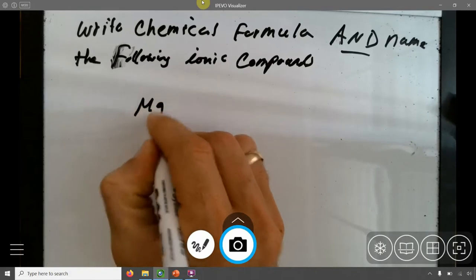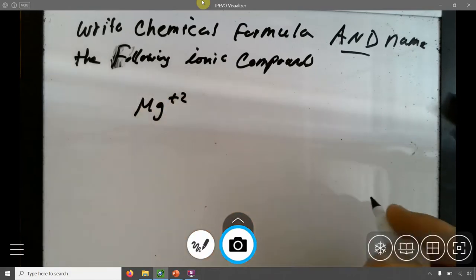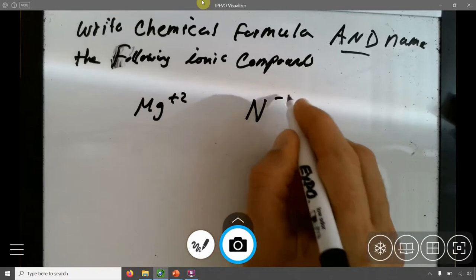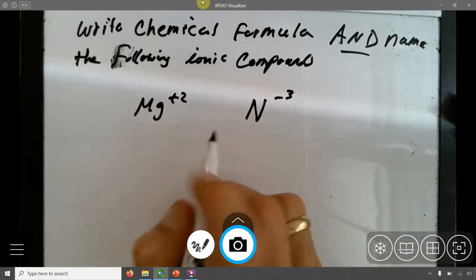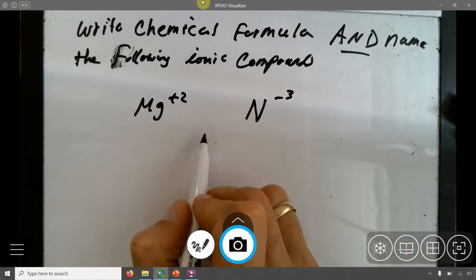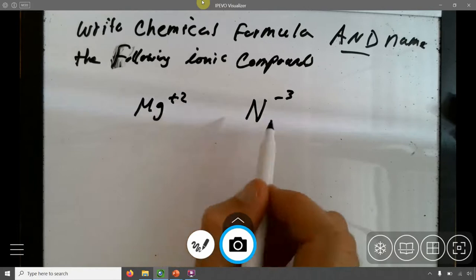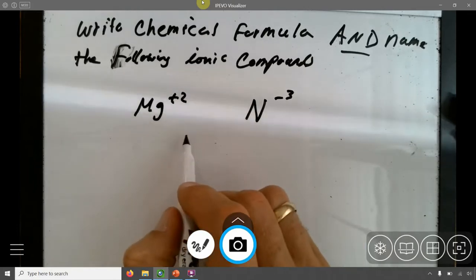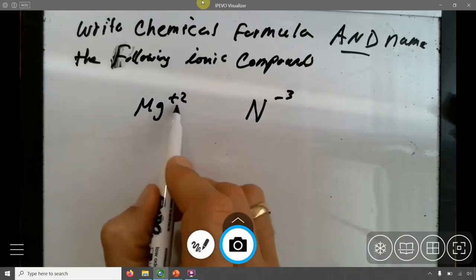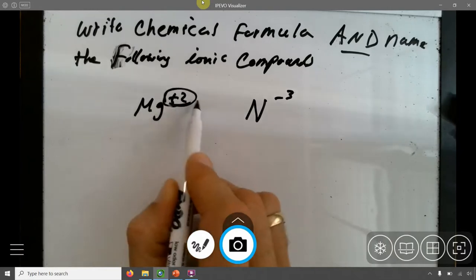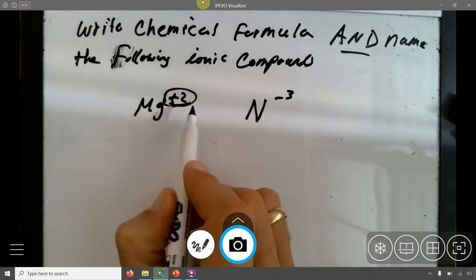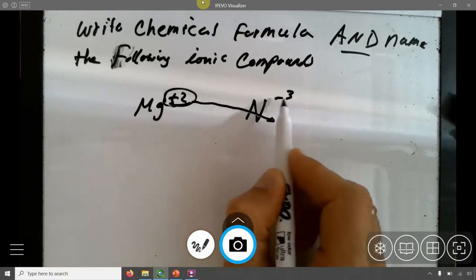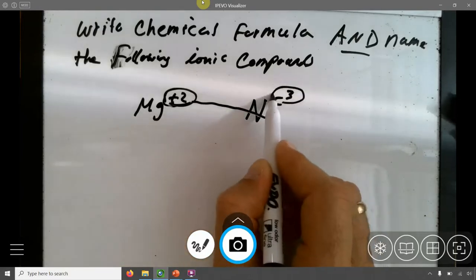I have Mg plus 2, whatever that is, and I have N minus 3. So first of all, for me to form this ionic compound, I have to have a total charge of 0 when these two end up hanging out. So to do that, I'll do a criss-cross. Take the absolute value of this thing, put it here. Take the absolute value of this thing, put it here.